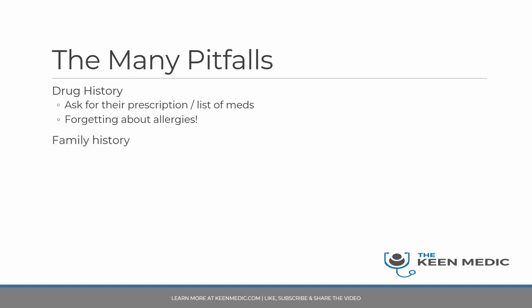Family history — if a patient has cardiac-sounding issues, you need to know their family history because it is directly relevant. Or if they've got malignancy at a young age, you also need to know their family history because they may have some kind of hereditary malignant syndrome.